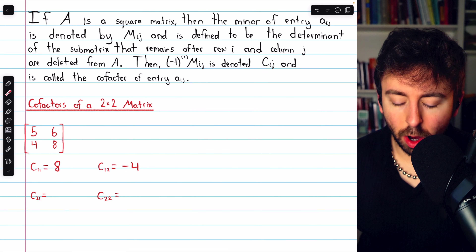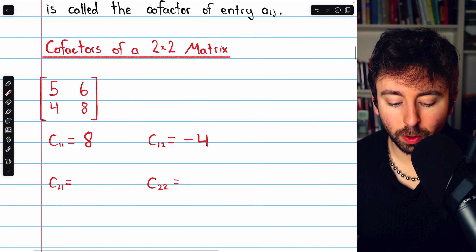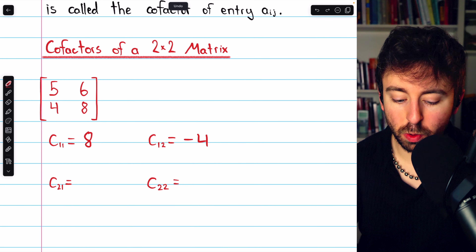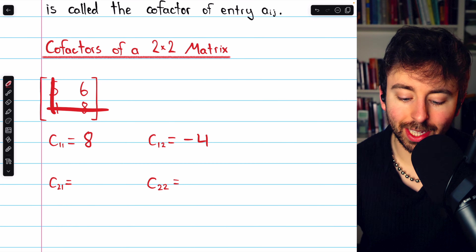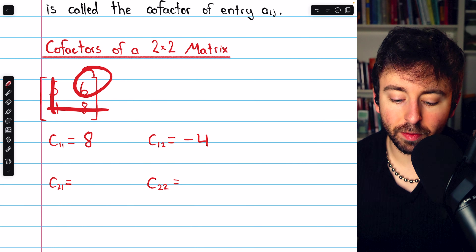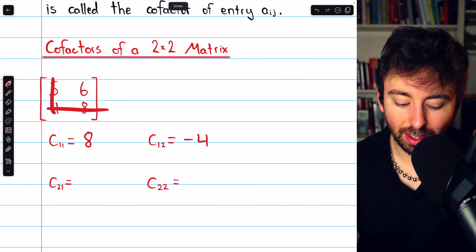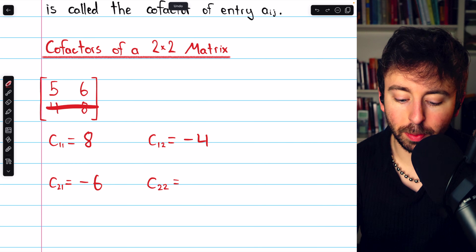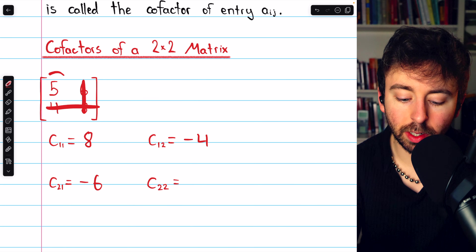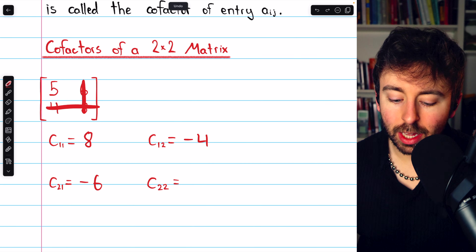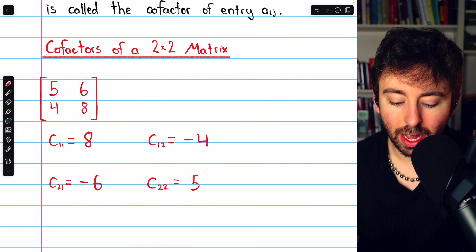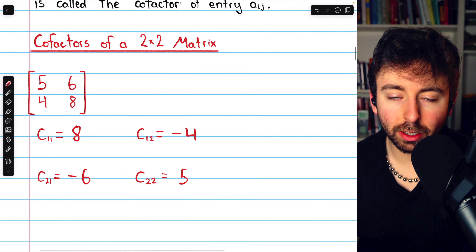Let's calculate the other two cofactors of this 2x2 matrix. For row 2, column 1, we eliminate that row and column — the determinant of the remaining submatrix is 6. The row and column have an odd sum, so it's negative 6. For the cofactor in row 2, column 2, we eliminate the row and column — the determinant of the remaining submatrix is 5. The row and column numbers have an even sum of 4, so there is no negative: C22 is just 5.